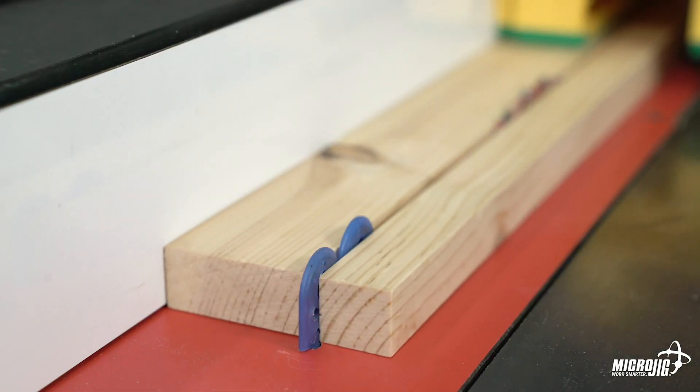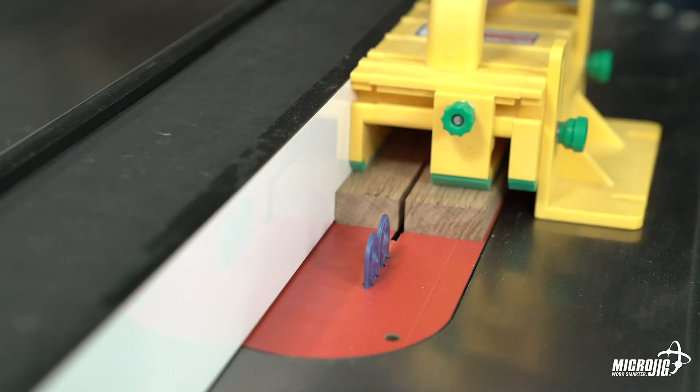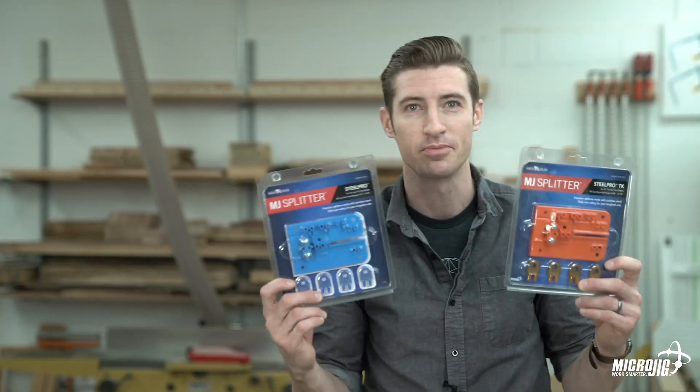Even a saw with a riving knife has its limitations. It can't be used with a zero clearance insert. And that's where the MJ Splitter comes in.